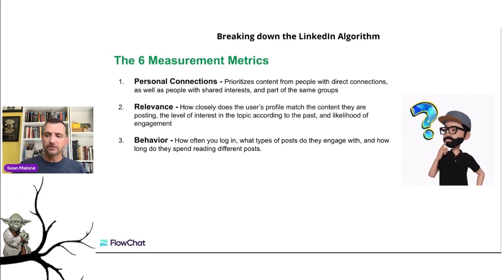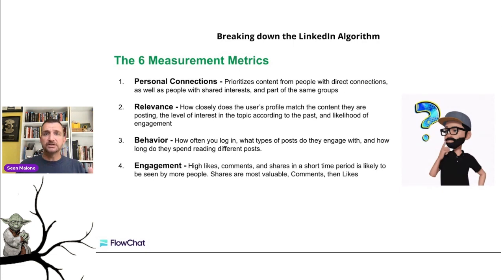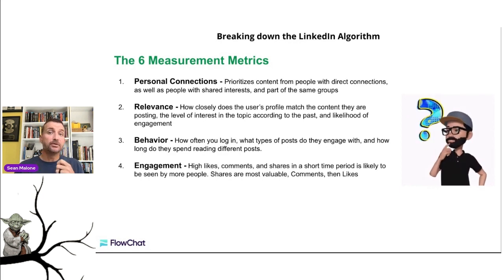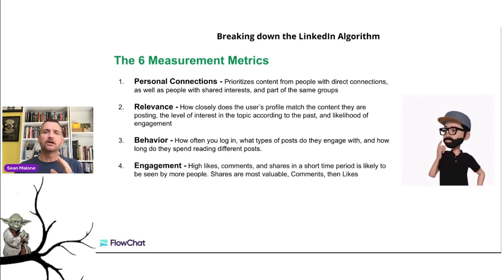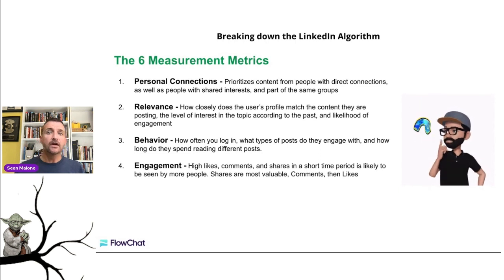Number four is engagement. High likes, comments, and shares in a short time period cause the algorithm to show your post to more people. Shares carry the most weight in the equation — getting people to share something is more valuable than just a comment. If you are going to comment, make sure it's a longer-form comment. Don't just make a smiley face or say one or two words — write something thoughtful. That's weighted more heavily than just a reaction.